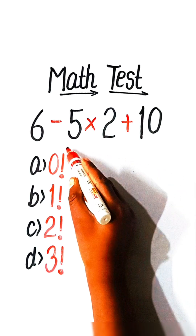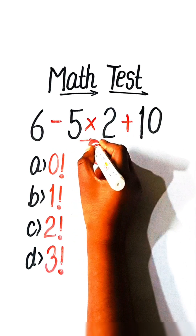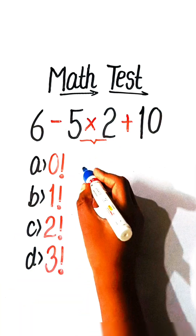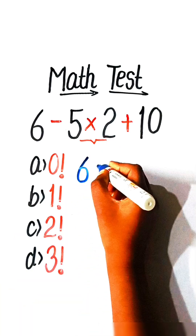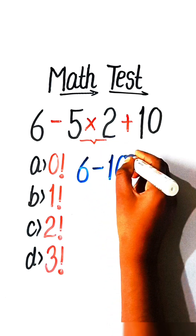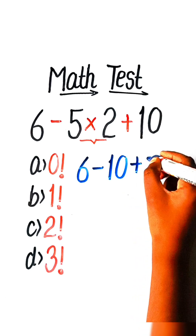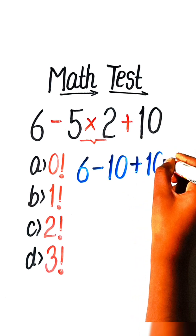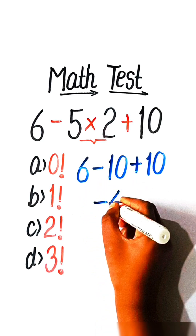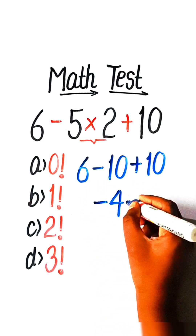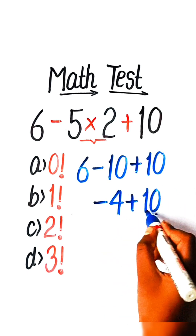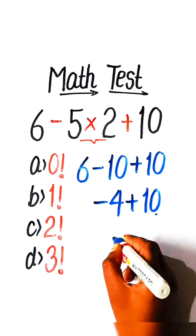Let's solve this. First we have to multiply: 6 minus 5 twos are 10, then 6 minus 10 plus 10. 6 minus 10 is minus 4, plus 10. We have the plus sign with the greater number, so we get 6.